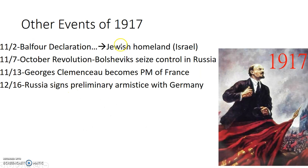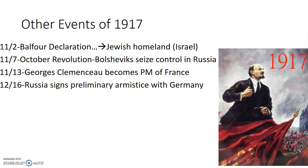Other events in 1917: we have the Balfour Declaration declaring a Jewish homeland, and the Bolsheviks seizing power in Russia. This is Vladimir Lenin — V.I. Lenin, Vladimir Ilyich Ulyanov — who is part of that group seizing control in Russia, leading to the Russian Civil War and the eventual establishment of Communism and the Soviet Union. Georges Clemenceau becomes Prime Minister of France. The whole idea of the revolution was to get rid of the Tsar and end the war, as Russia is getting crushed economically and in terms of food. So they sign a preliminary ceasefire armistice with Germany.